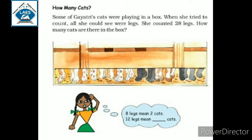Jo Gayatri hai uske paas kuch cats hain. Yeh jo cats hain, woh khel rahi thin aur box mein chali gayin. Gayatri ne socha ki chalein mein cat ko count karti hoon, kitni cats hain. Jaise usne count karna shuru kiya, to cat to dikhi nahi rahi. Jo cat hain unke legs, unke paon dikh rahe hain. Sirf cat ke jo legs hain, wahi dikh rahe hain. To Gayatri ne counting start kar di, aur counting hua 28 legs.